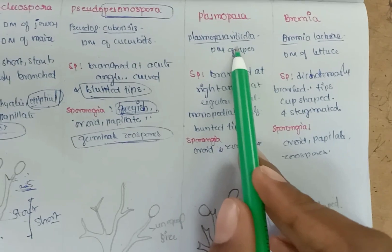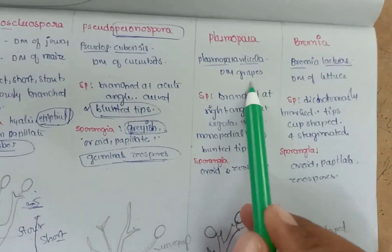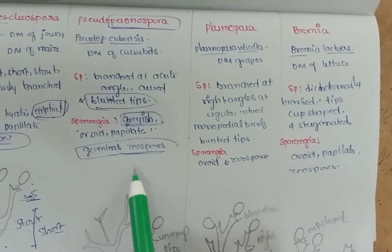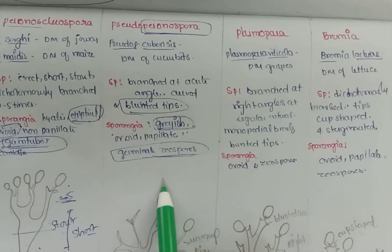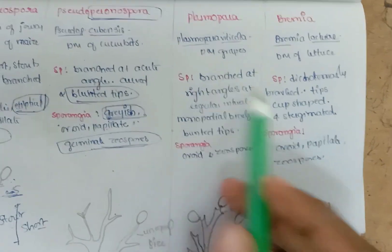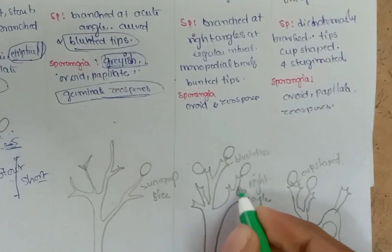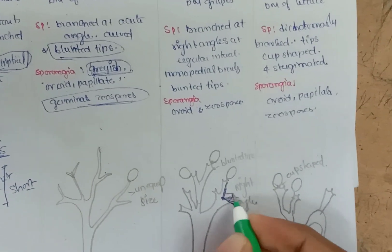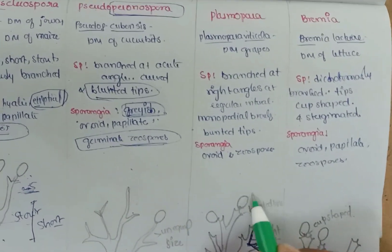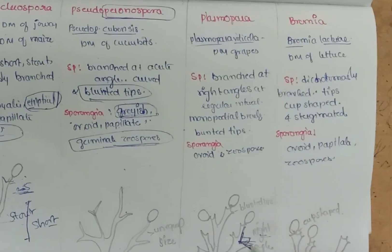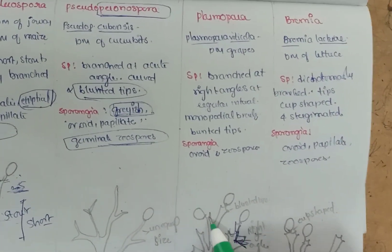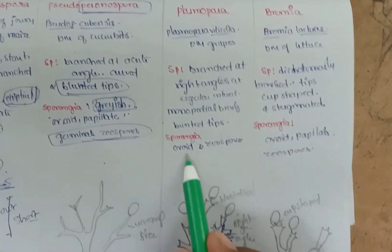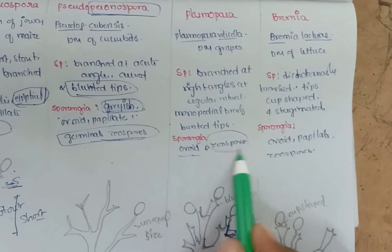Next is Plasmopara — for example, Plasmopara viticola, the Downy Mildew of grapes. Unlike the previous genera discussed, Plasmopara has right-angled branching — 90 degrees — occurring at regular intervals, as can be observed in the diagram. The sporangia are ovoid and germinate through zoospores.